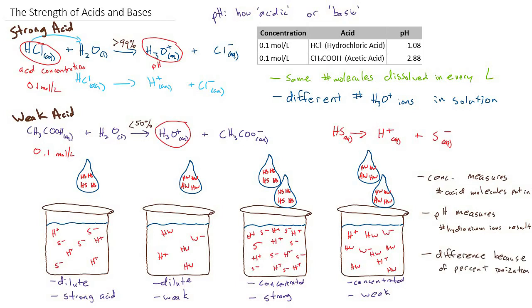So for an acid that ionizes 100%, a strong acid, we can say the concentration of the acid is equivalent to the hydronium ion concentration. I'm just going to go back up to the top and make that note. So the concentration of HCl is equal to the concentration of hydronium ions. And from here, we could calculate the pH if we wanted to.